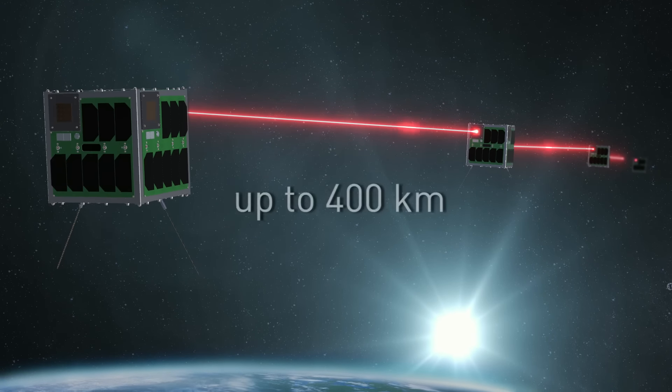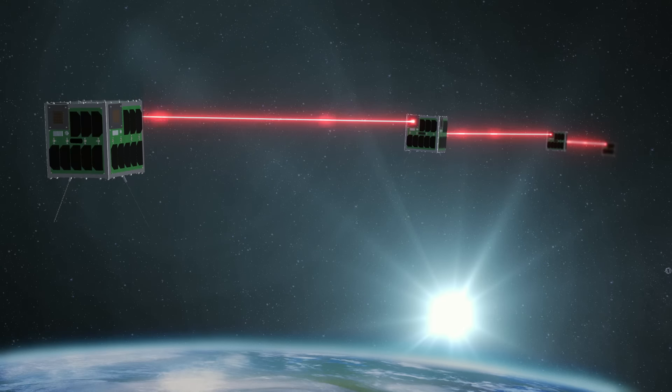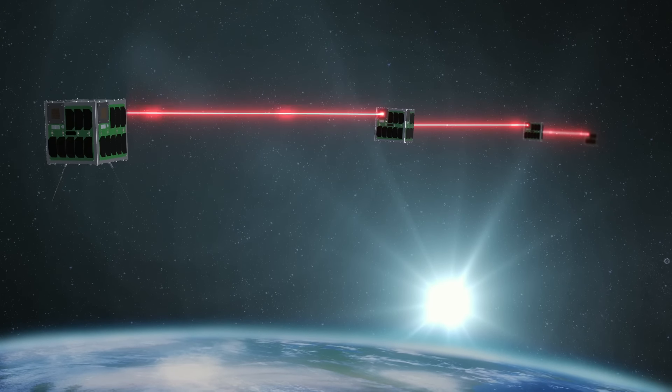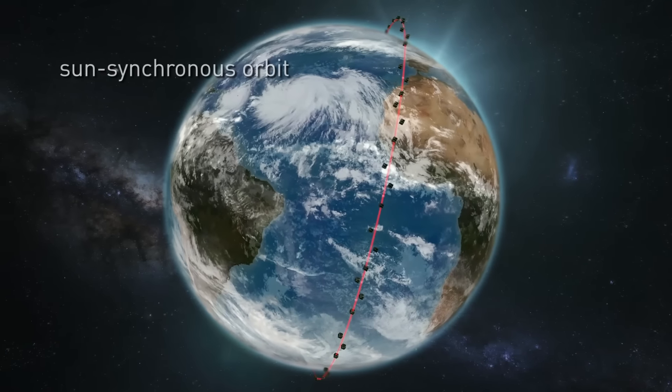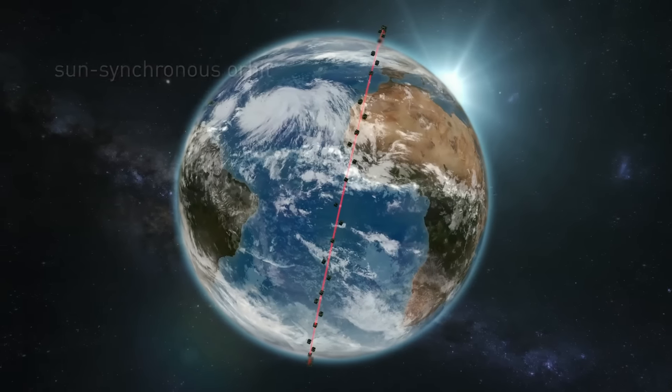The distances between the satellites can reach up to 400 km before exceeding the range limit of the individual transceivers. The satellites remain in sun-synchronous orbit, which enables the swarm to pass over the ground station at TU Berlin.